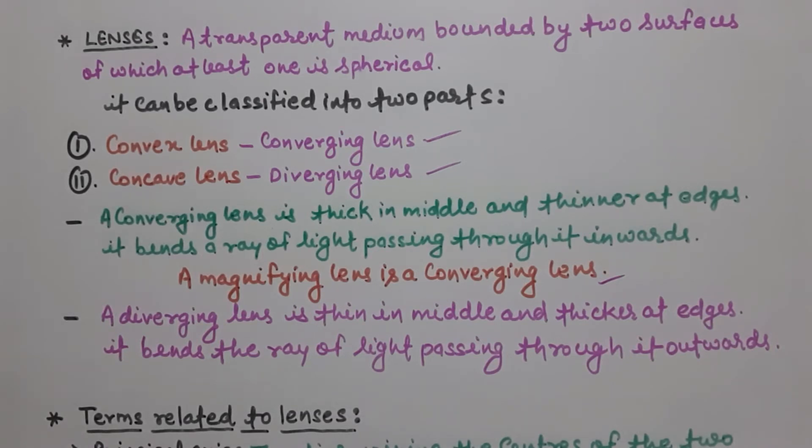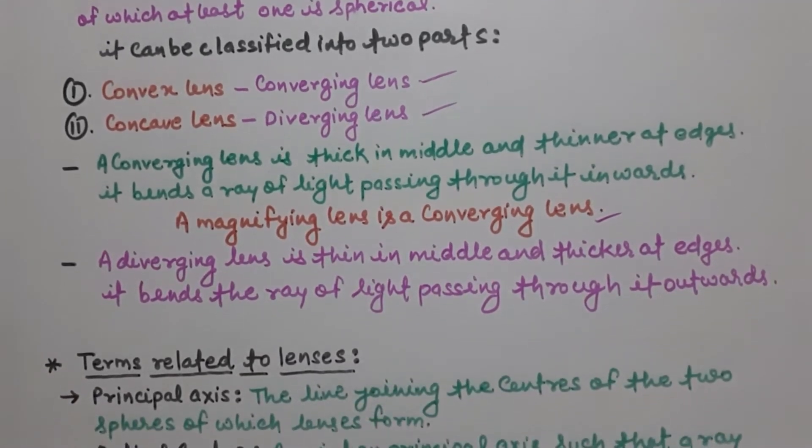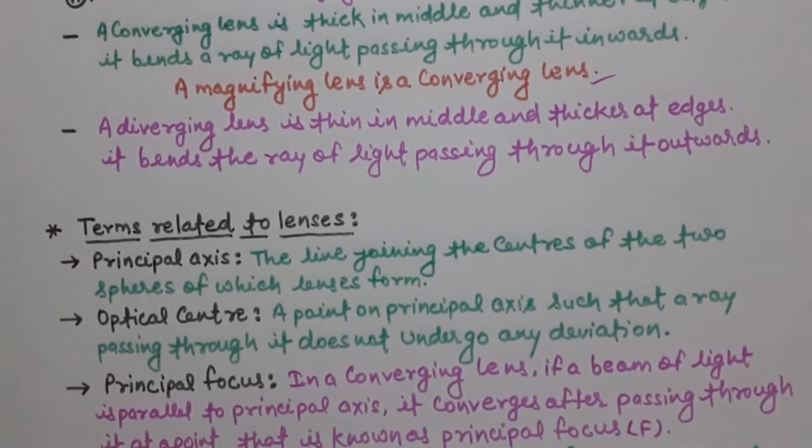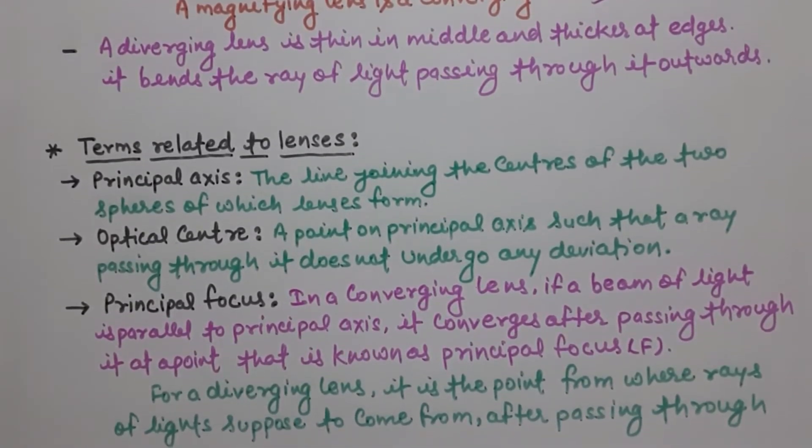That is terms related to lenses. First thing is principal axis. So the line joining the centers of the two spheres of which lenses form, the line is known as principal axis.